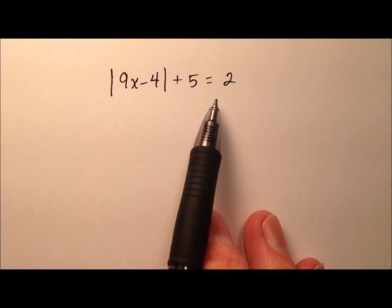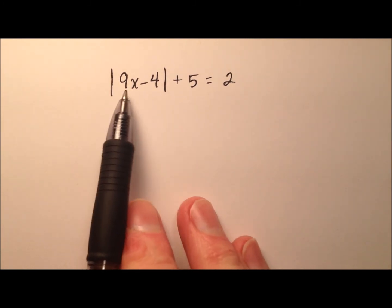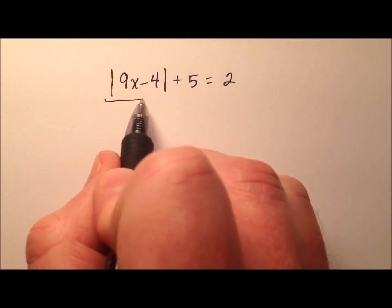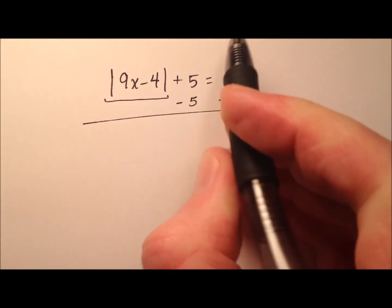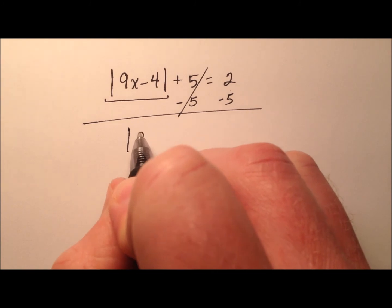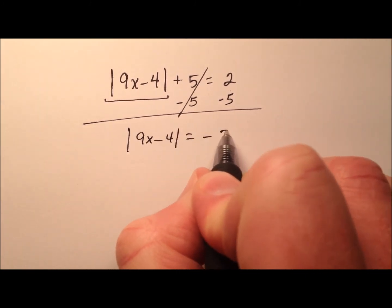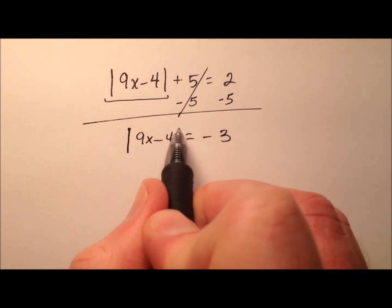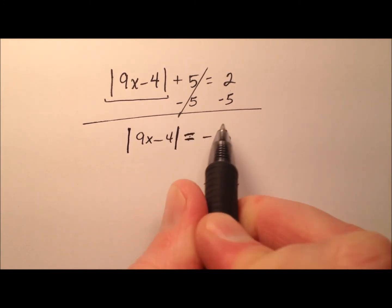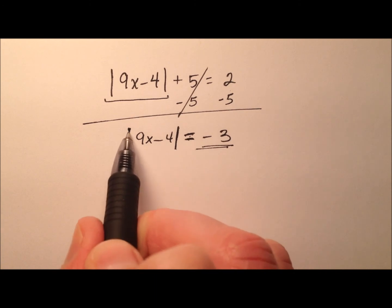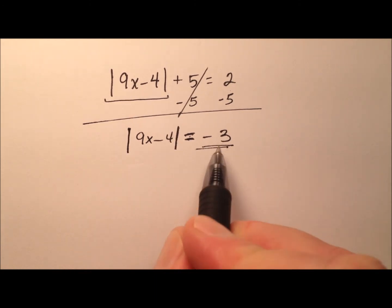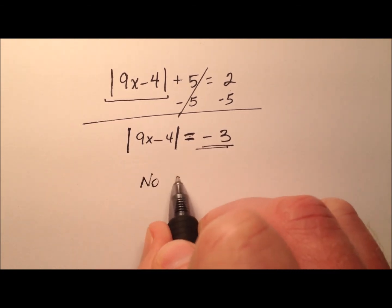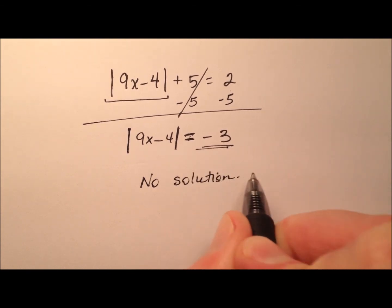In this third and final example, we have the absolute value of 9x minus 4, and adding 5 to that gives 2. Let's isolate the absolute value expression by subtracting 5 from both sides, leaving the absolute value of 9x minus 4 equals negative 3. Immediately I see a problem: I cannot take the absolute value of anything and get negative 3, because absolute value is always non-negative. So there are no values of x that make this true — the answer is no solution.